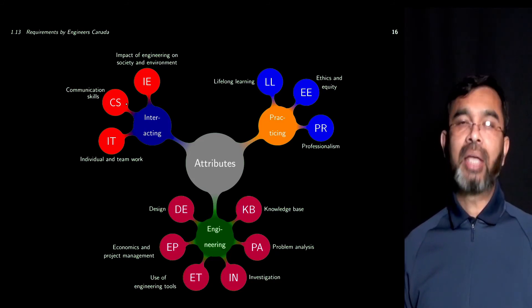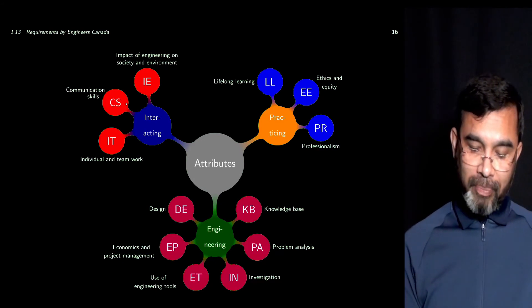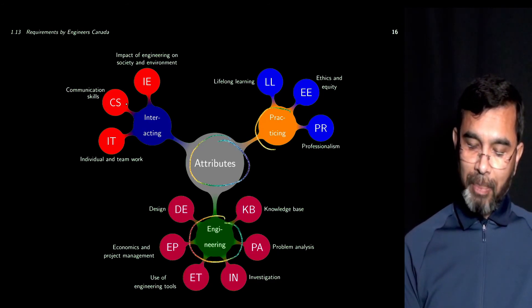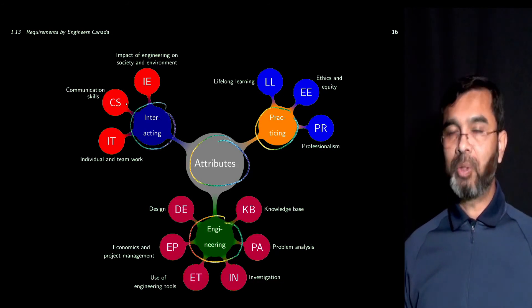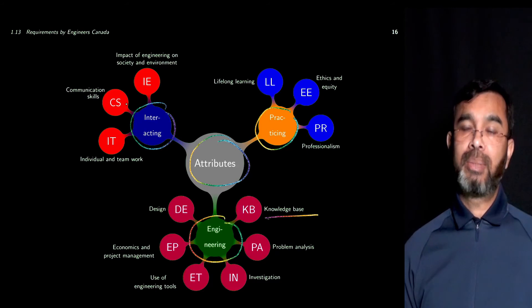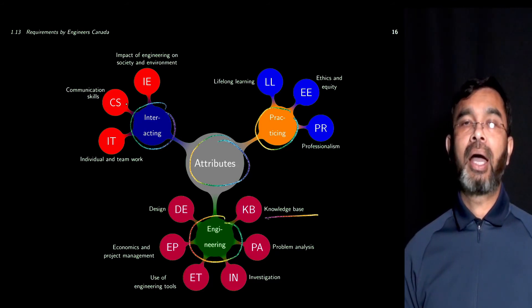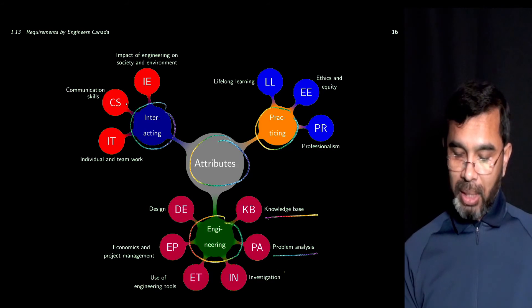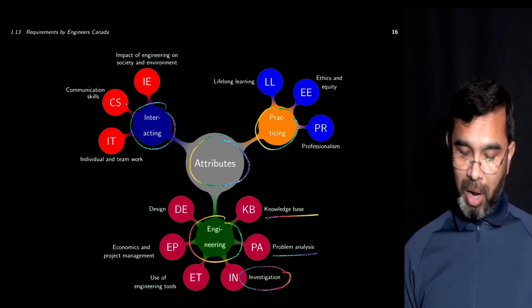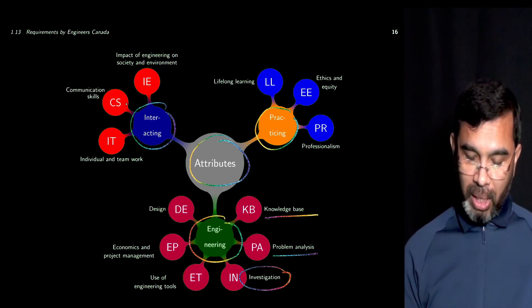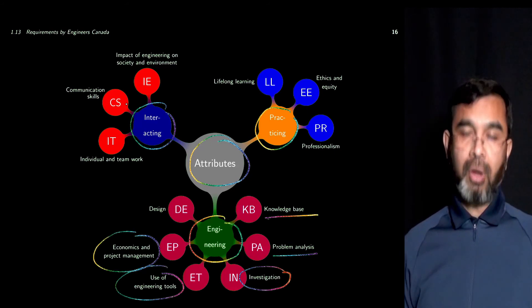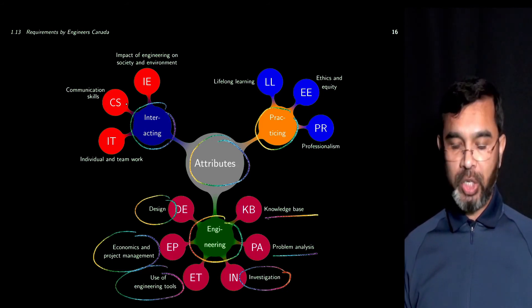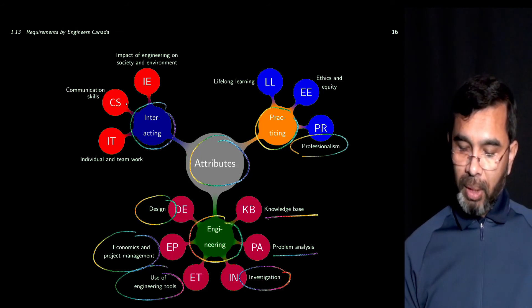Engineers Canada requires that a graduate from an engineering program should have 12 attributes, which I have sub-categorized into three groups: engineering attributes, practicing attributes, and interacting attributes. Engineering attributes include the knowledge base about the discipline, problem analysis, investigation, design of solutions, and use of tools — as well as consideration of economics, project management, and design of engineering solutions.